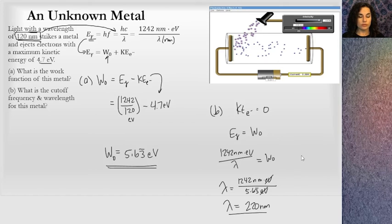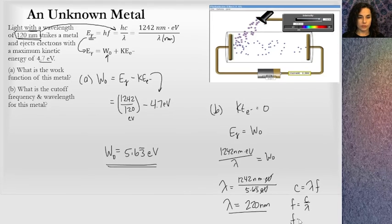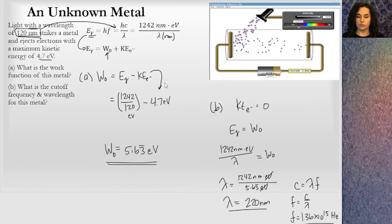If I wanted to find the frequency, I know C equals lambda F. So if I wanted to find the frequency, I would go C over lambda. We know lambda, and so I get the frequency is 1.36 times 10 to the 15th hertz.